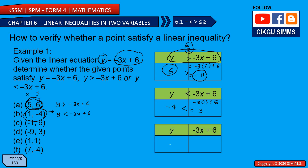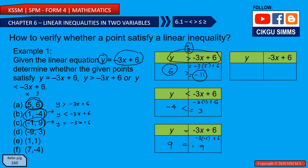For point (-1, 9): substituting, -3(-1) + 6 = 3 + 6 = 9. So 9 equals 9. This means y = -3x + 6 — the coordinate is located exactly on the line.